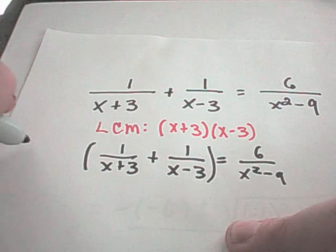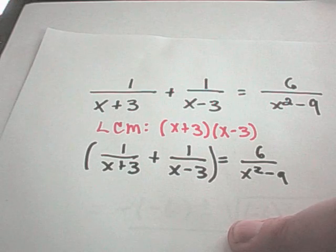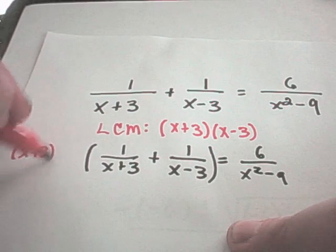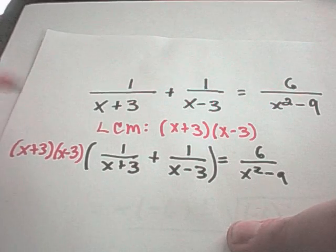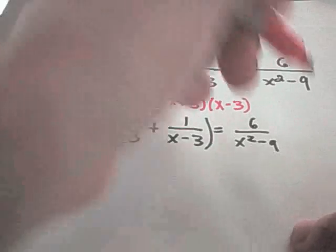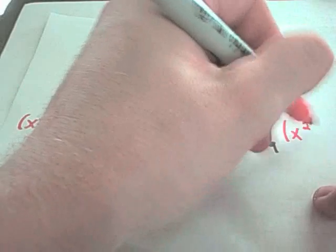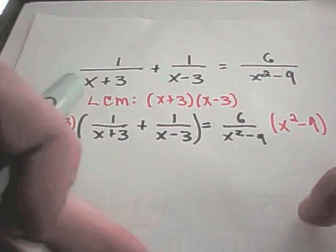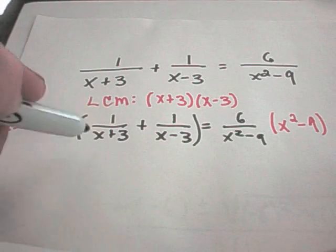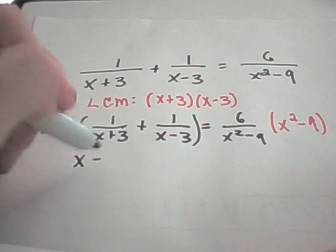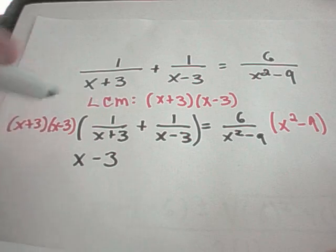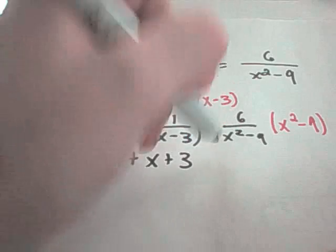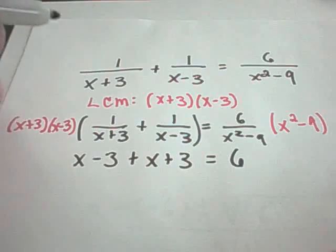On the left side, multiplying through: the x plus 3's cancel leaving x minus 3, and the x minus 4's cancel leaving x plus 3. On the right side, x plus 3 times x minus 3 over x squared minus 9 simply leaves 6.